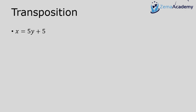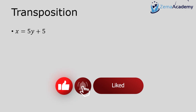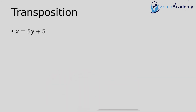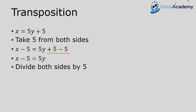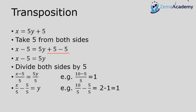Here's a simple example. Given x equals 5y plus 5, I want to solve for y. First, I subtract 5 from both sides: x minus 5 equals 5y plus 5 minus 5. The 5s on the right cancel, giving x minus 5 equals 5y. Then I divide both sides by 5: x minus 5 over 5 equals 5y over 5.